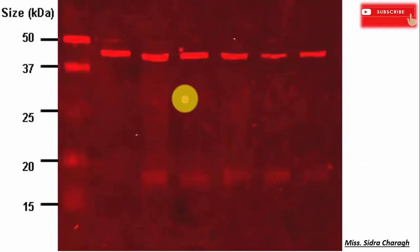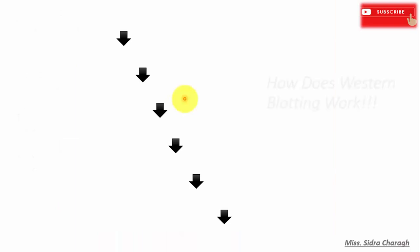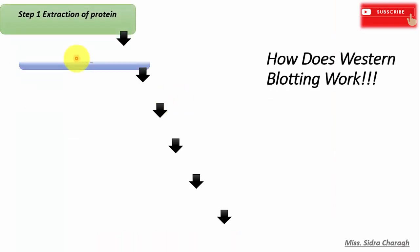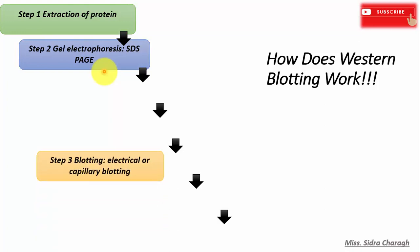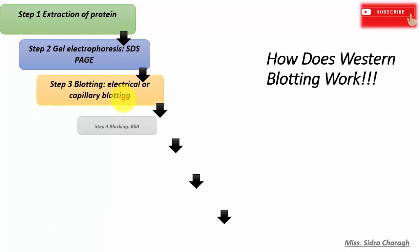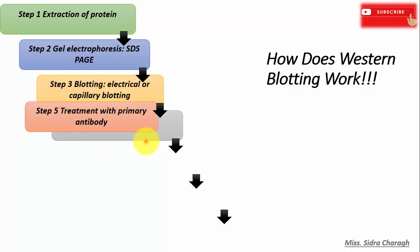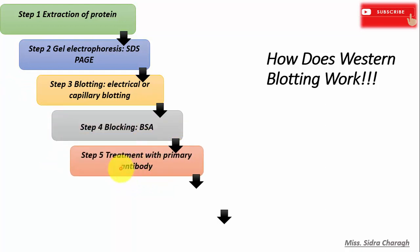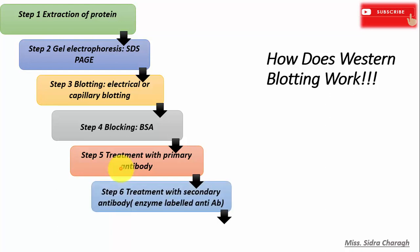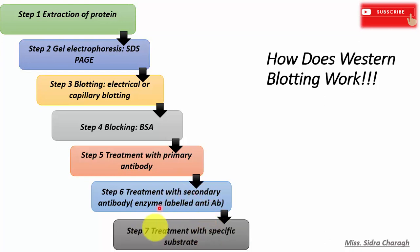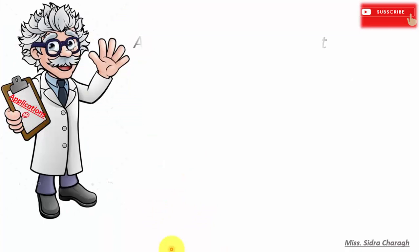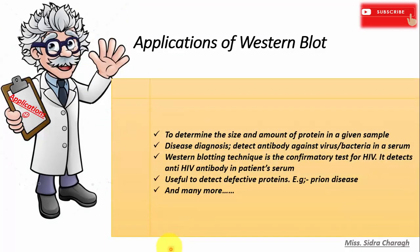Western blotting is a quantitative test to determine the amount of protein in a sample. To summarize the Western blotting steps: first is extraction of protein, then gel electrophoresis using SDS-PAGE, then blotting, then blocking the membrane using bovine serum albumin, then treatment with primary antibody, then treatment with secondary antibody which is an enzyme-labeled antibody, and the final step is treatment with a specific substrate.